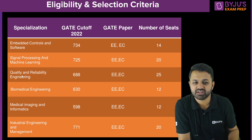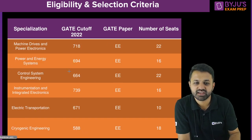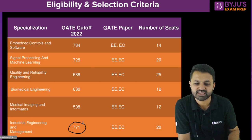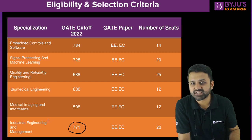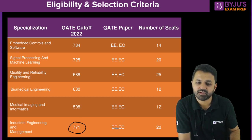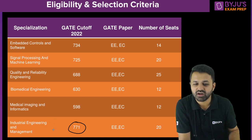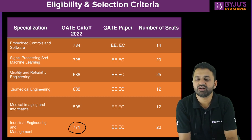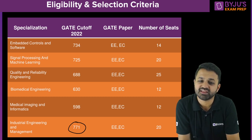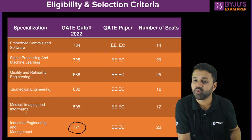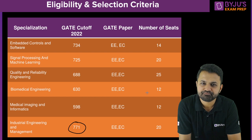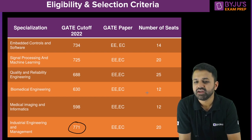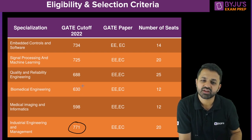Industrial Engineering and Management at 771 and Instrumentation and Integrated Electronics at 739 are the two highest cutoff branches. Industrial Engineering and Management has very good scope in the future, which is why students show high interest in it. There are also a few other branches from outside EE/EC that are eligible, with 20 seats. Overall, IIT Kharagpur has roughly 350 seats across all these specializations.